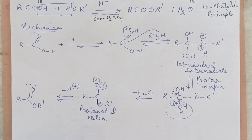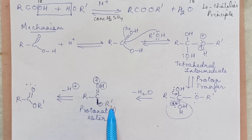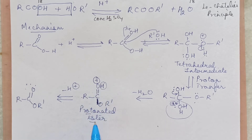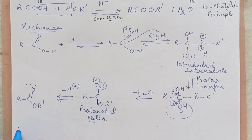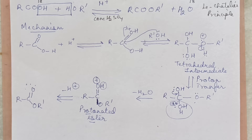You can see R-C-O-O-R', but H was extra, so it is a protonated ester. When H goes away, this becomes the normal ester. This mechanism, if asked, you can write. It is not given in the alcohol chapter — you will find it in the carboxylic acid chapter. But we should be covering it here.